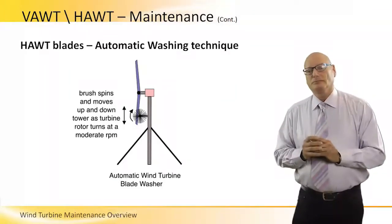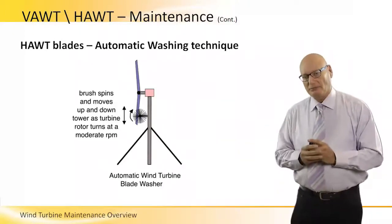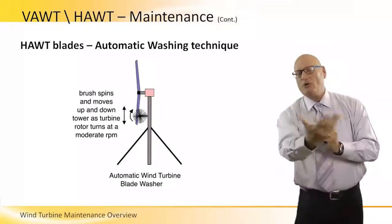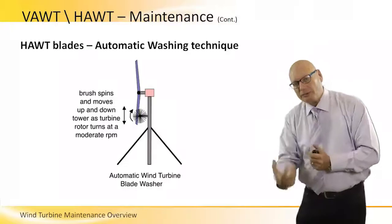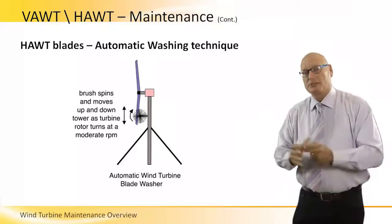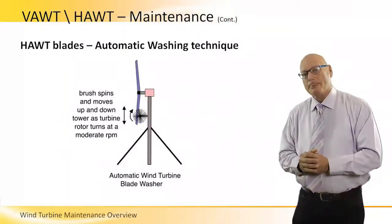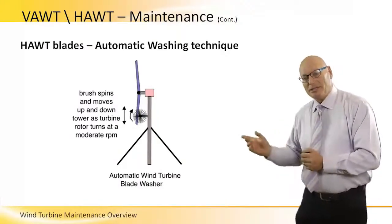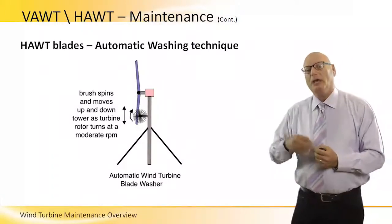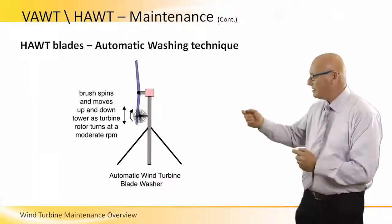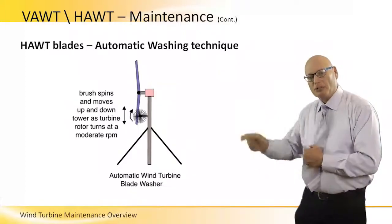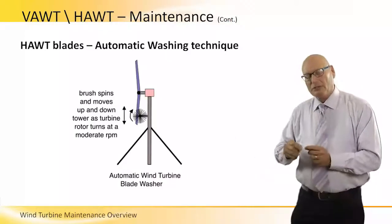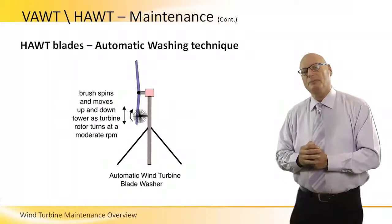This is a technique to automatically wash turbine blades. We need to keep in mind that blades should be very clean and smooth to allow air to slip over and pass through efficiently. If the turbine has dirt on it — from birds killed by hitting the rotating blade, for example — we need to ensure the blades are smooth and clean. This technique is a typical method for washing HAWT blades as they rotate: a brush mechanism moves up and down the tower, and as the blades rotate, the entire surface of the turbine is cleaned.